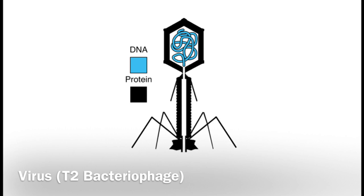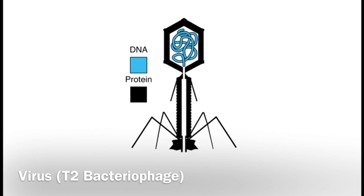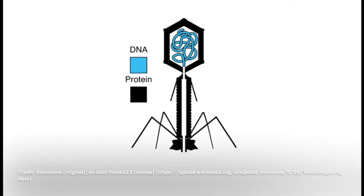Viruses use host cells in order to reproduce and in this case these viruses infect bacteria. And so the question became, when the virus is used to infect the bacteria, would it be the DNA or would it be the protein that was present in the viral offspring or progeny found inside the bacteria?